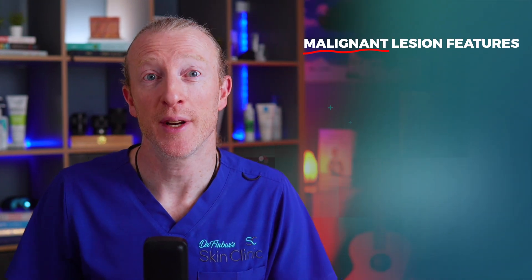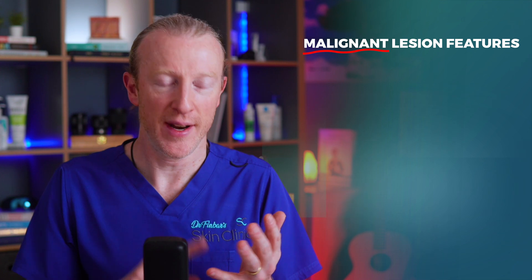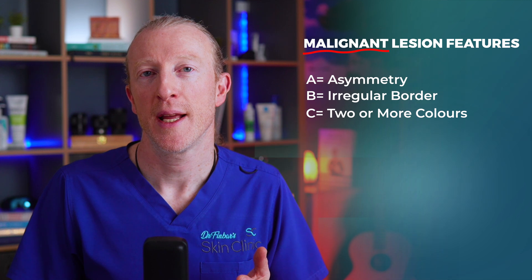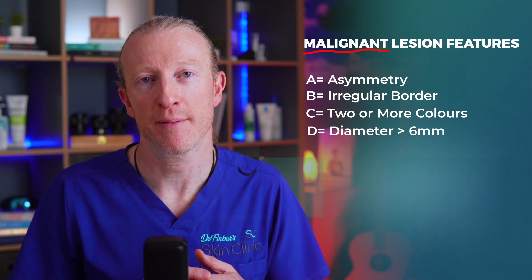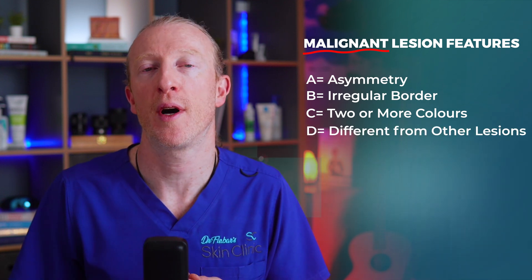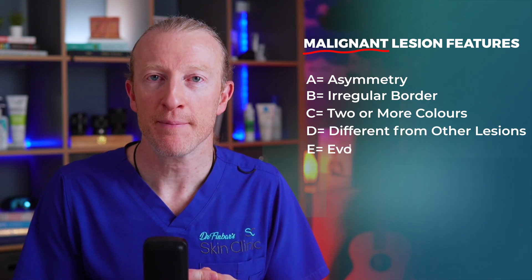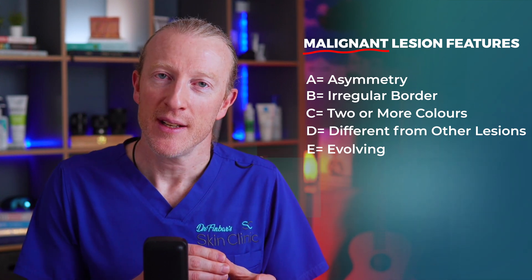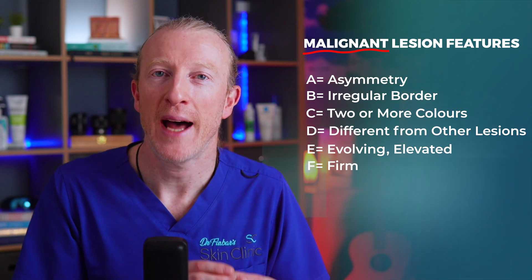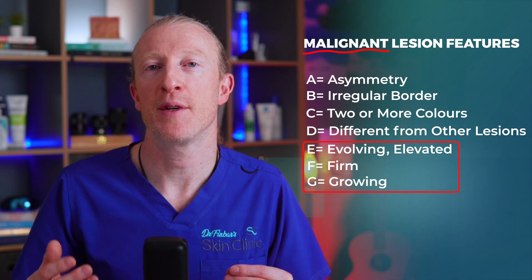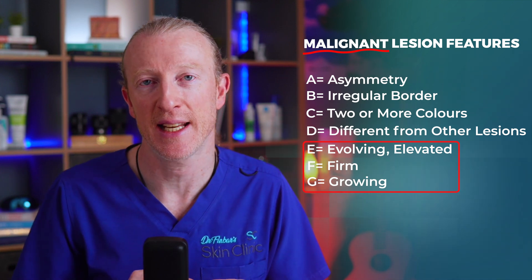Here are some pointers of concern. Know your ABCDE and EFG. A is for asymmetry, B for irregular border, C for two or more colours, D for a diameter greater than 6mm — though I like to think of D as being different from all your other lesions — E for evolving. Then EFG: E for elevated or raised, F for firm, and G for growing. Those three together — elevated, firm, and growing — may represent a fast-growing lesion like an SCC or a melanoma.